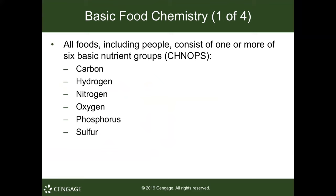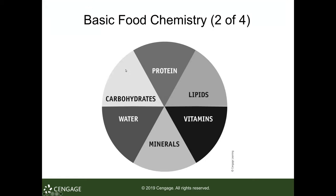These elements are crucial to all living life on Earth, and especially for us, all six are crucial — without them, we don't exist. As far as the different types of components in our food, we have carbohydrates, proteins, lipids, water, minerals, and vitamins.